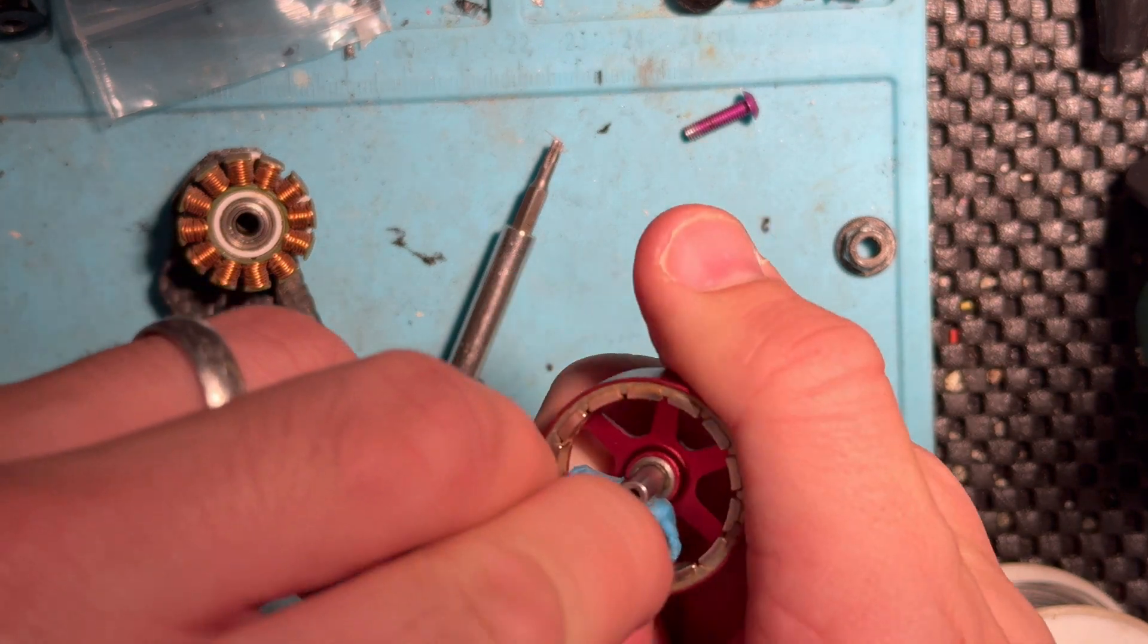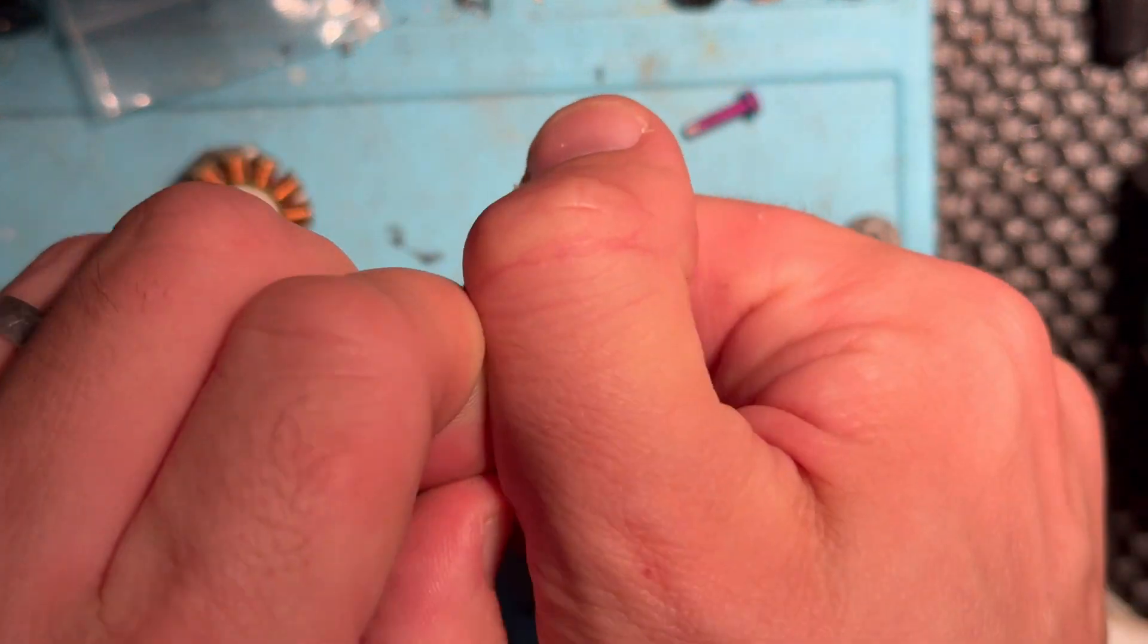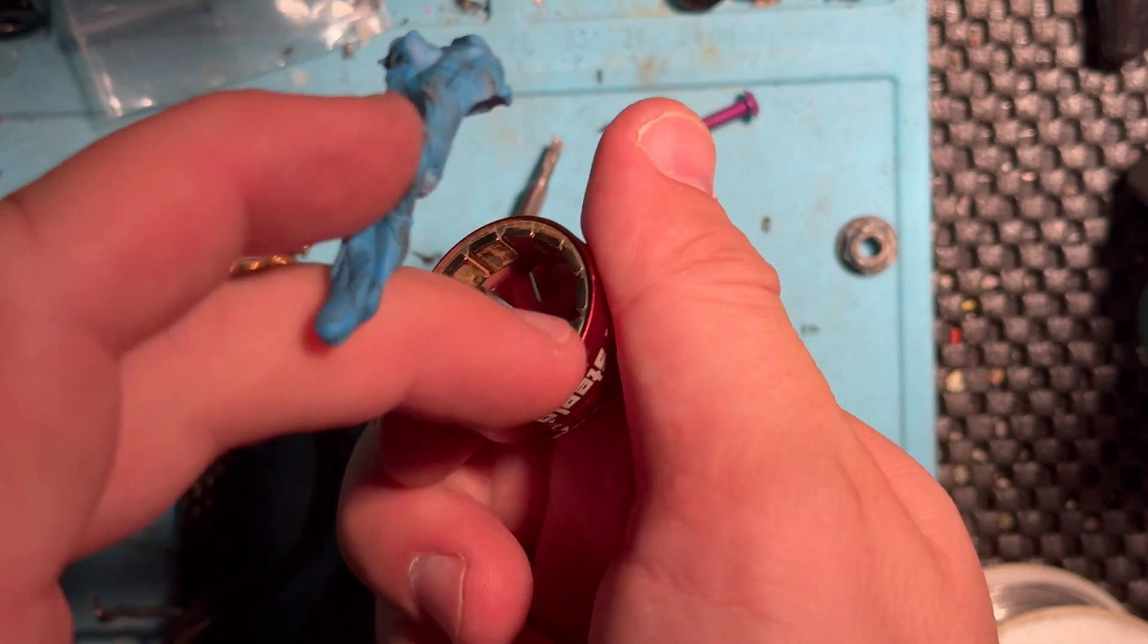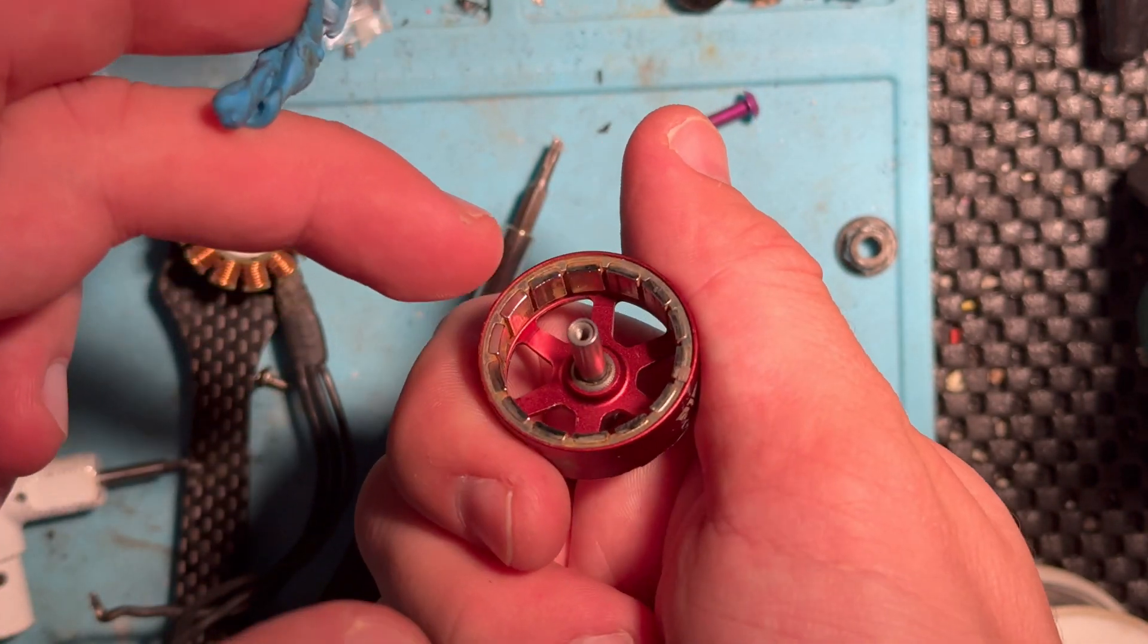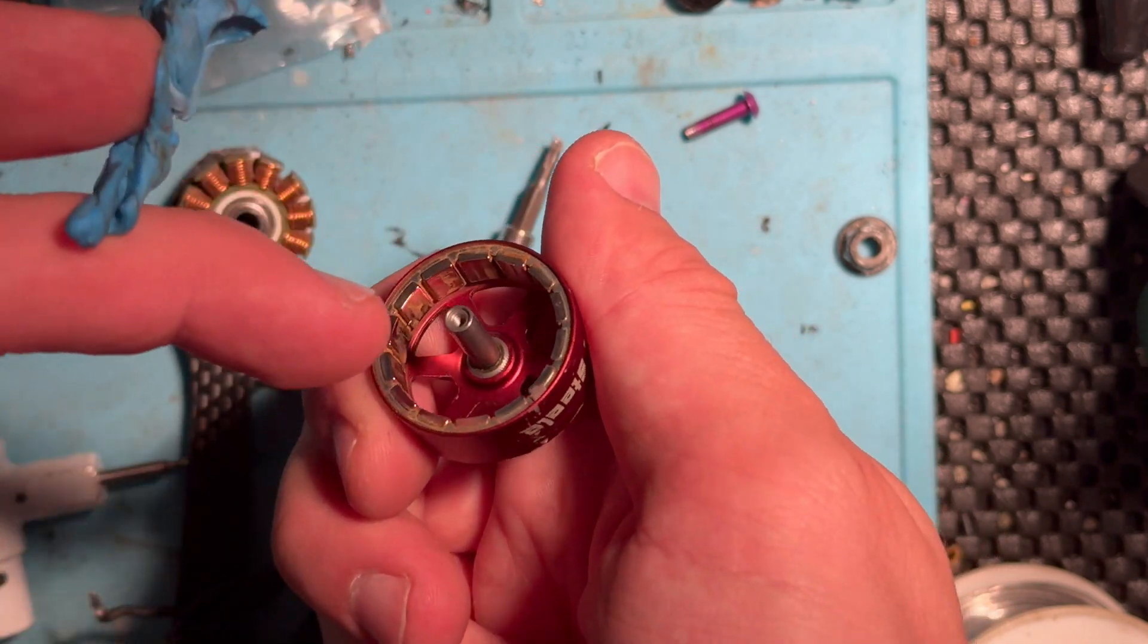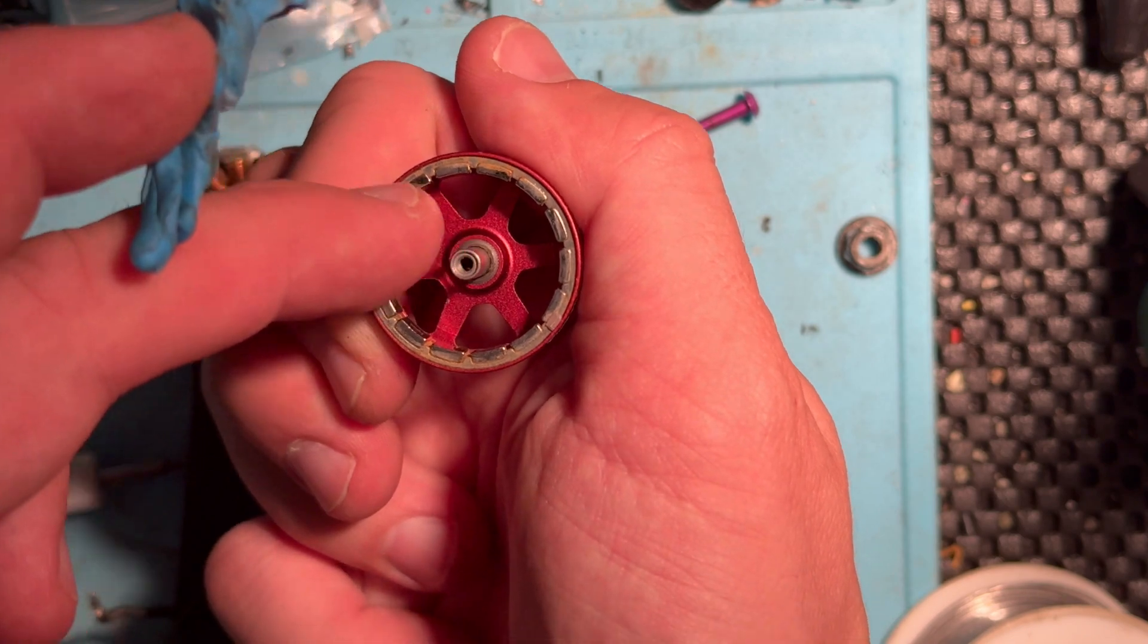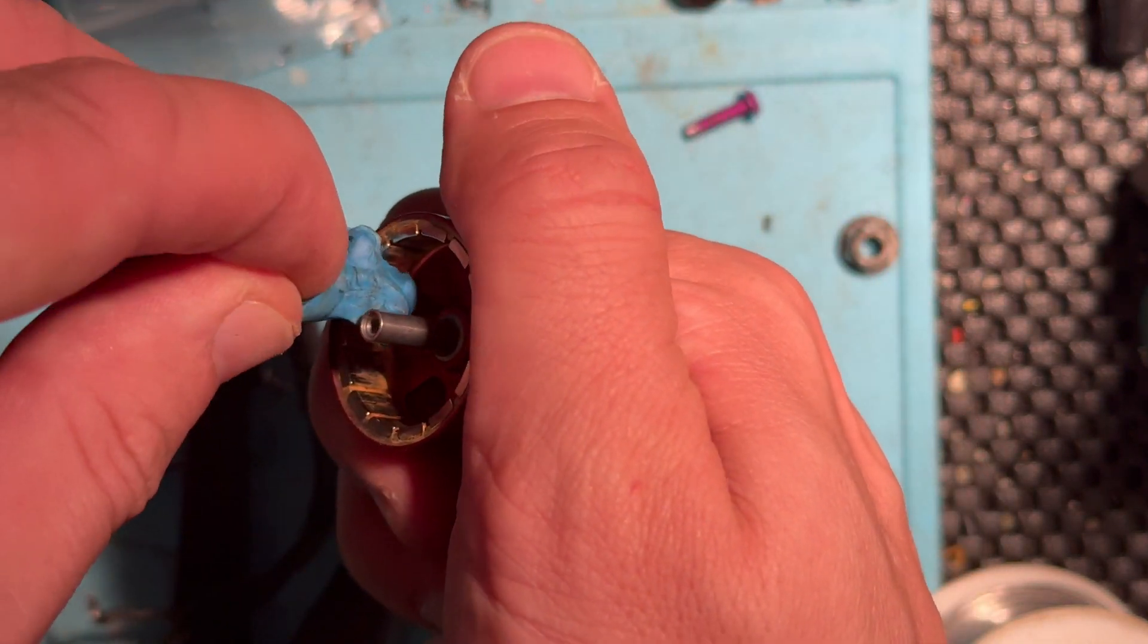And you're just going to work your way around the bell. Make sure you get full coverage. Really get it in deep. You want to make sure you're not only cleaning out the magnets themselves, but you want to make sure there's nothing in between the magnets and nothing left caked in on the top of the spoke, which it looks actually pretty clean.